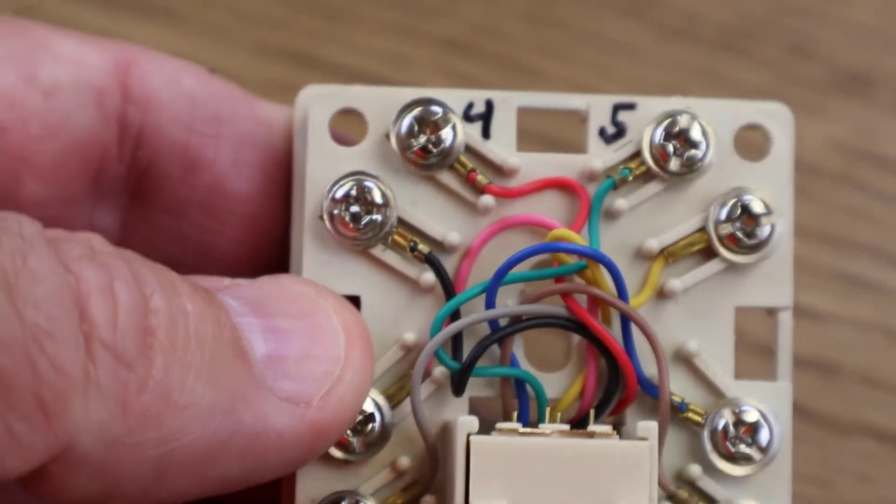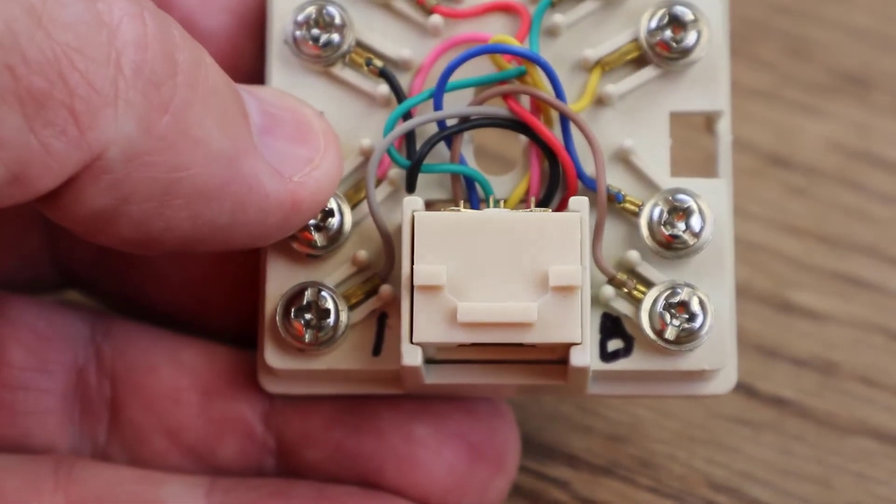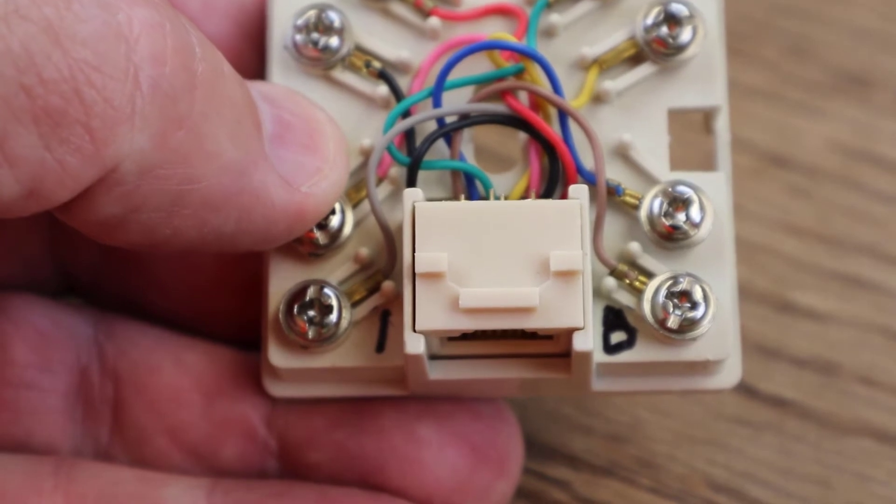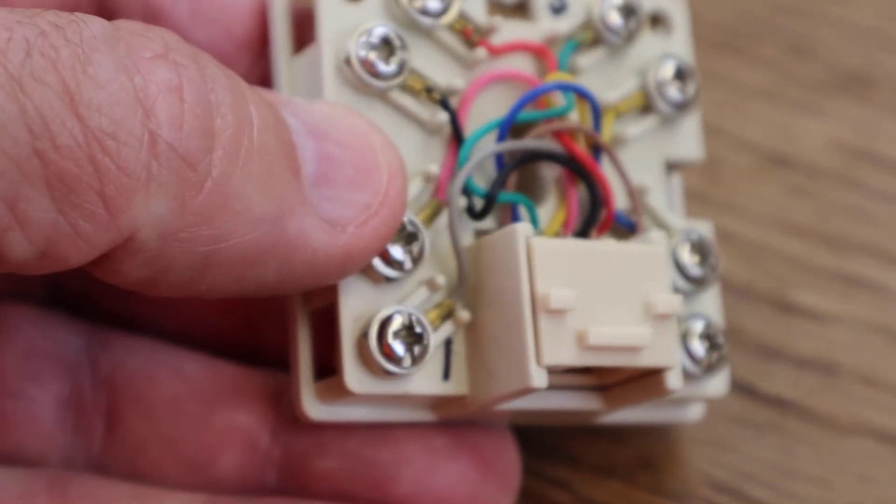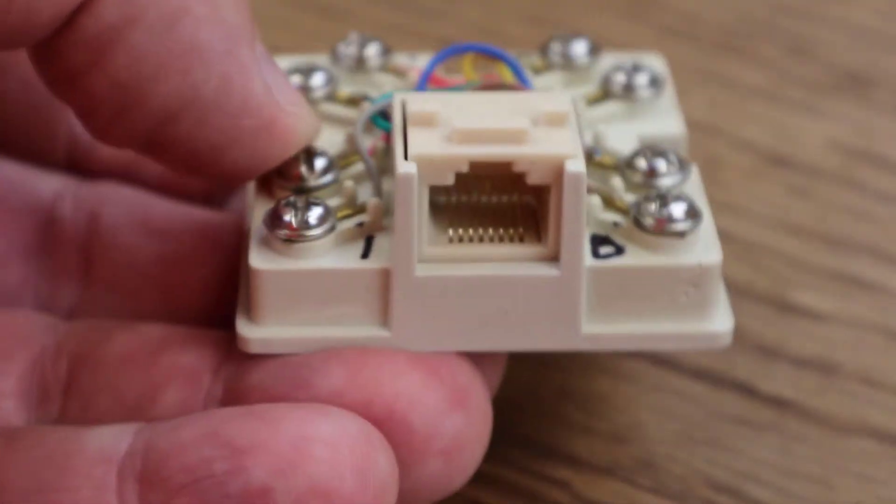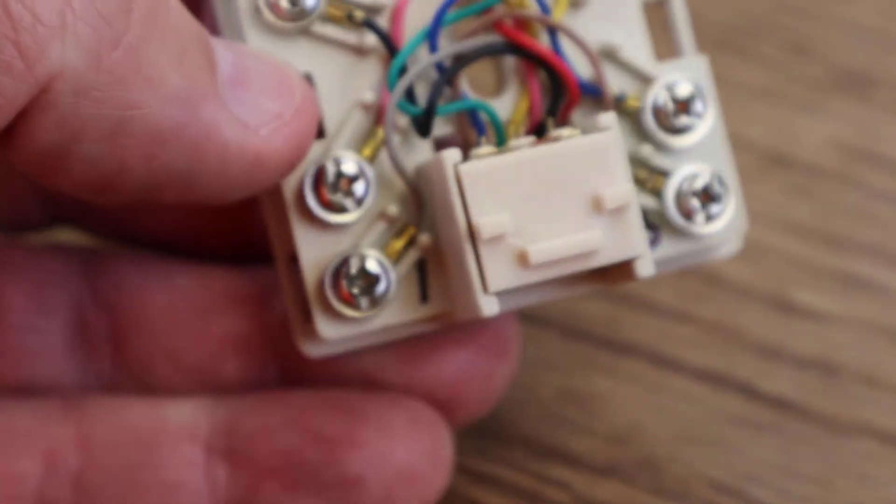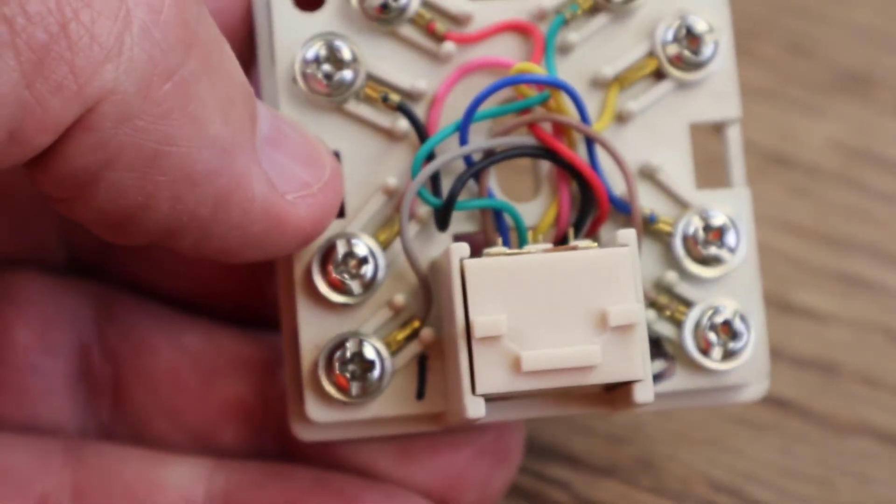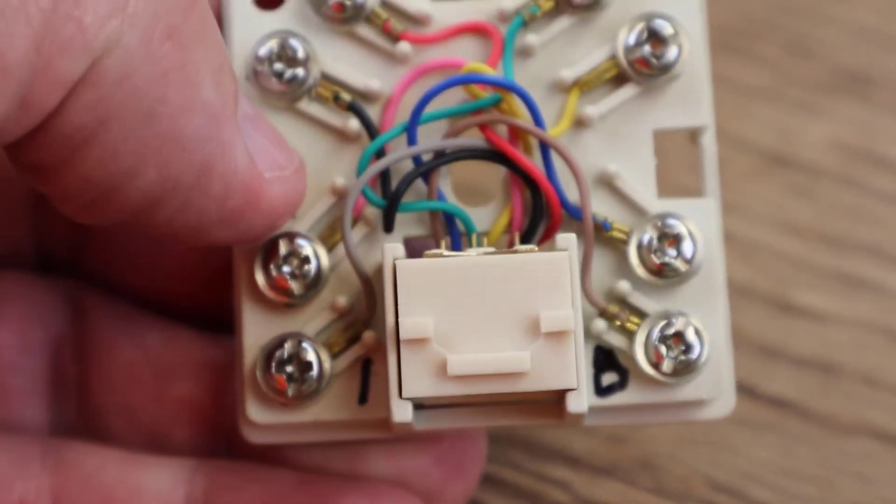Because remember, we come in with our dial tone on four and five and we go out to our device, let's say a telephone or a fax machine or a CO line for a phone system on pins one and eight. So with nothing plugged into that, pins four and one are continuous and pins five and eight are continuous.